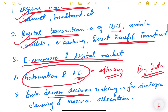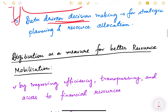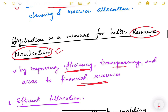From these five components you will understand that digitization is a very broad concept that includes various things. Digitization is actually a means of better resource mobilization. Since we are studying resource mobilization, we need to look at digitization from the point of view of how resource mobilization becomes more efficient, more transparent, and more beneficial for the entire country. Digitizing the economy enhances resource mobilization by improving efficiency, transparency, and access to financial resources.